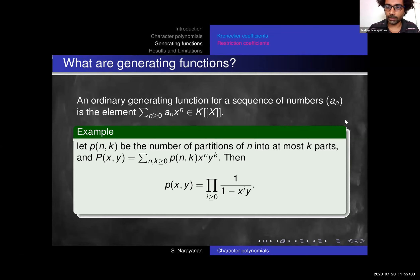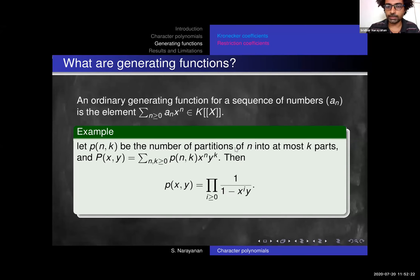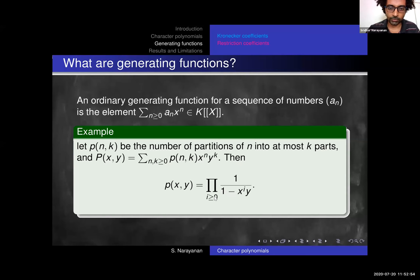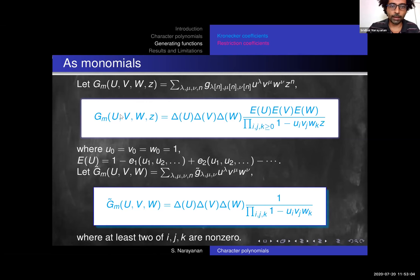Before we get into the generating functions, a brief primer. If you have a sequence of numbers a_n, you encode it as a generating function where a_n is the coefficient of x^n, belonging to a power series ring. As an example, consider P(n,k) — the number of partitions of n into at most k parts — which already requires a generating function in two variables. It has this rational form. The generating functions we are going to look at involve several more variables than just one or two.